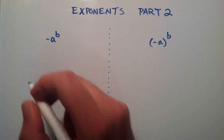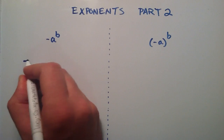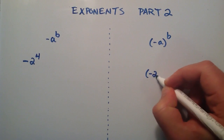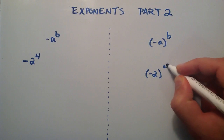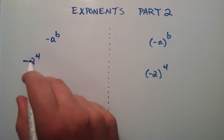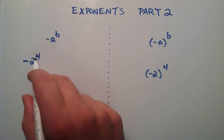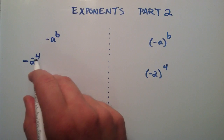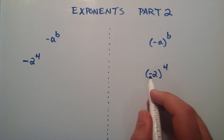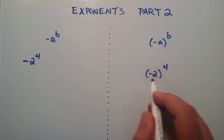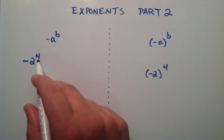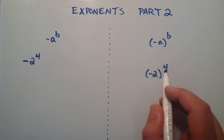Let me give you an example of this. Let's say that we have negative 2 raised to the fourth power, and let's compare that to negative 2 raised to the fourth power, but this time we're putting the negative 2 inside parentheses. For the first case, we're saying that we have the number 2 and we're raising it to the fourth power, and the result of that will be negative. On the other side, we're actually raising the negative 2 to the fourth power, not just the 2.